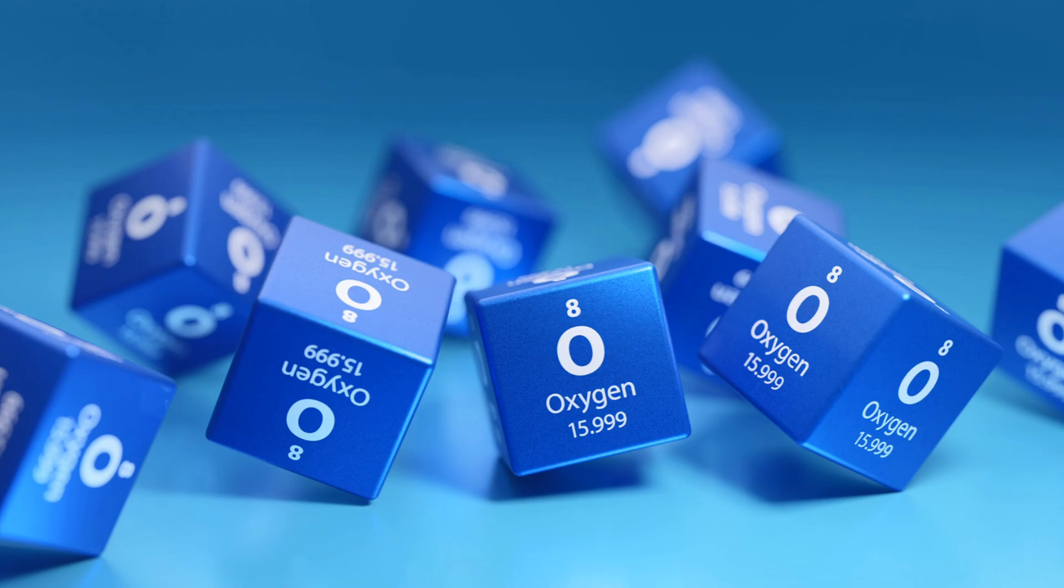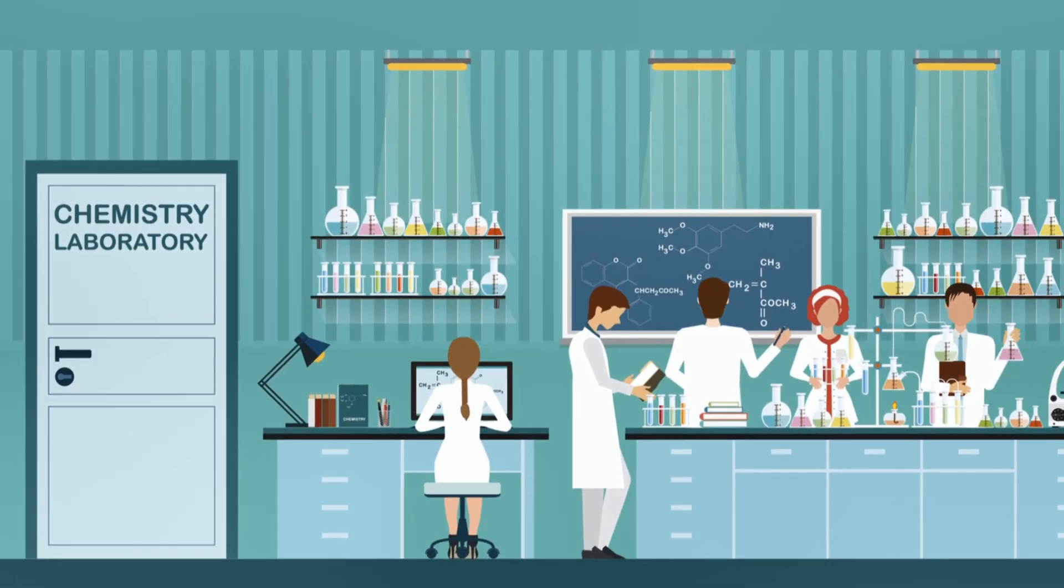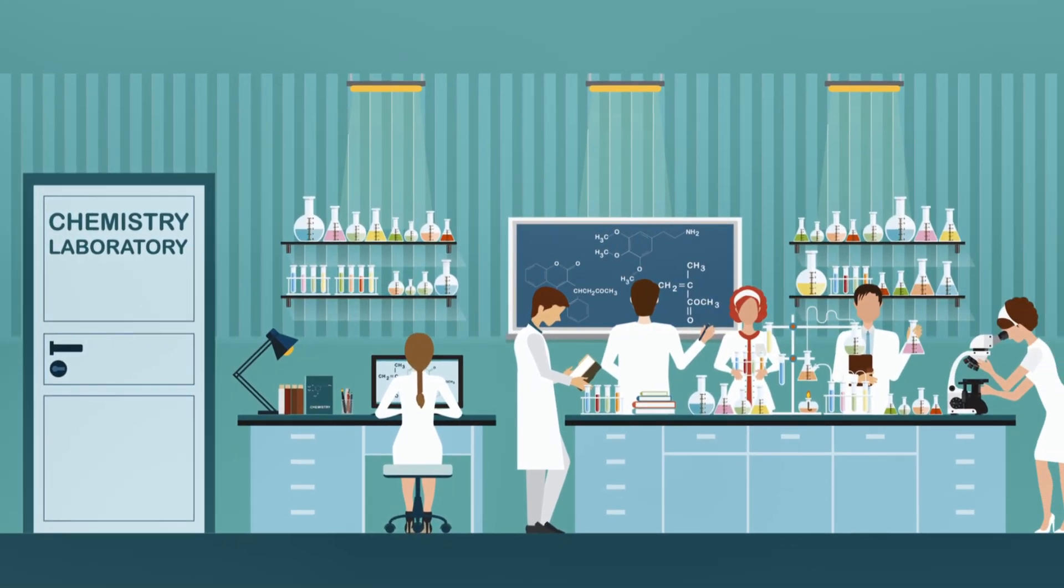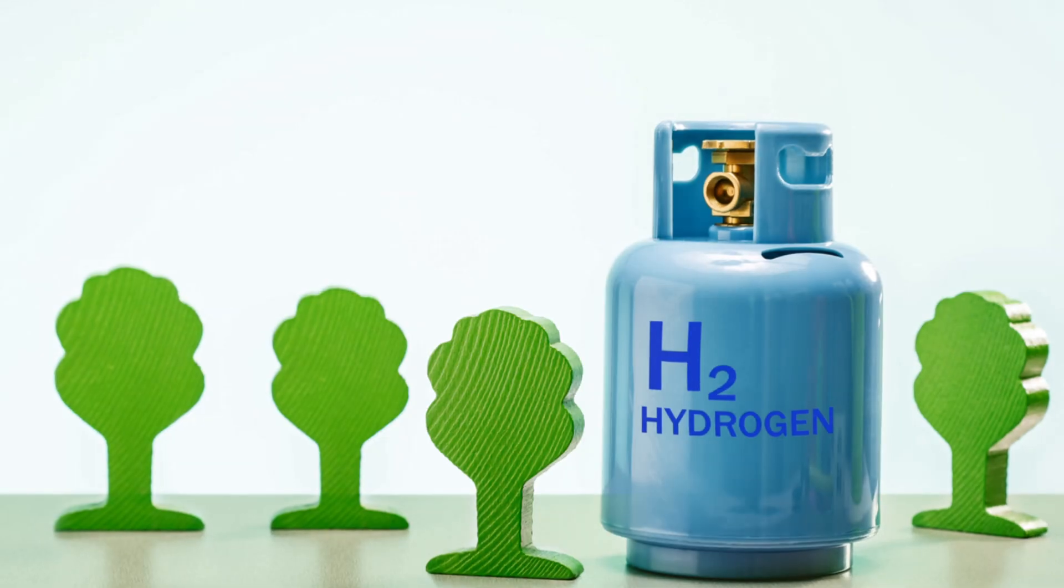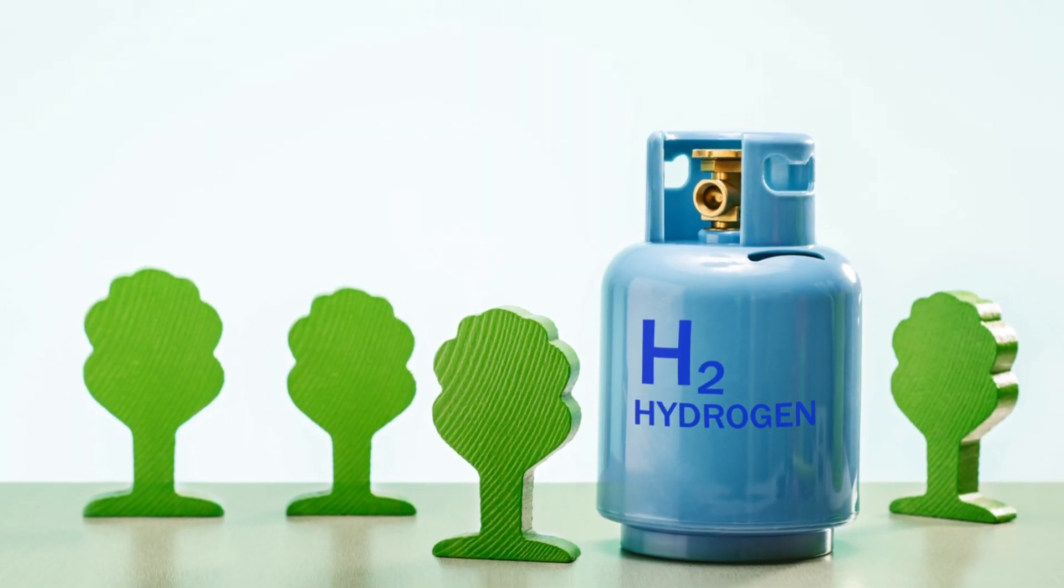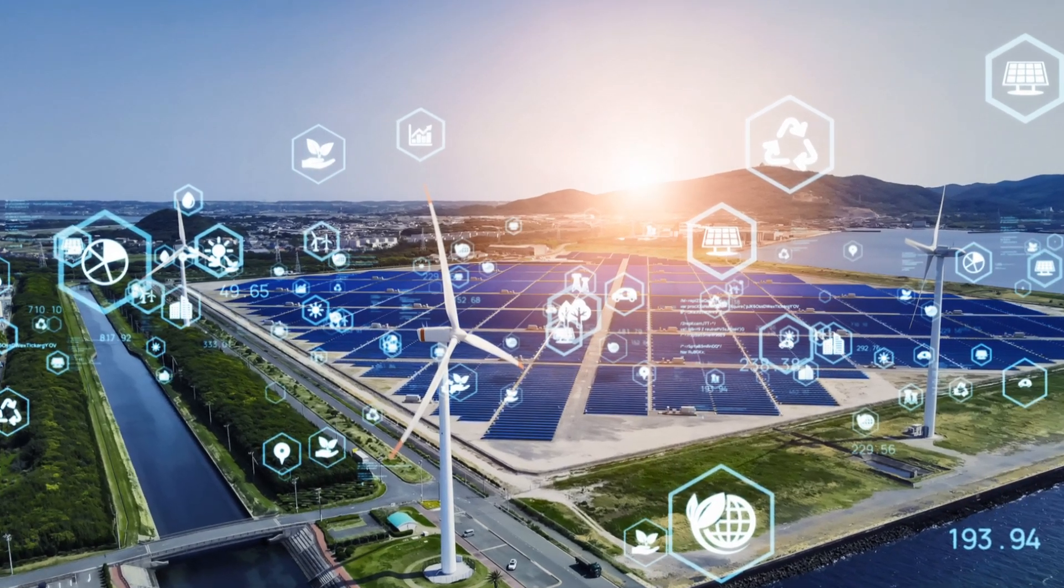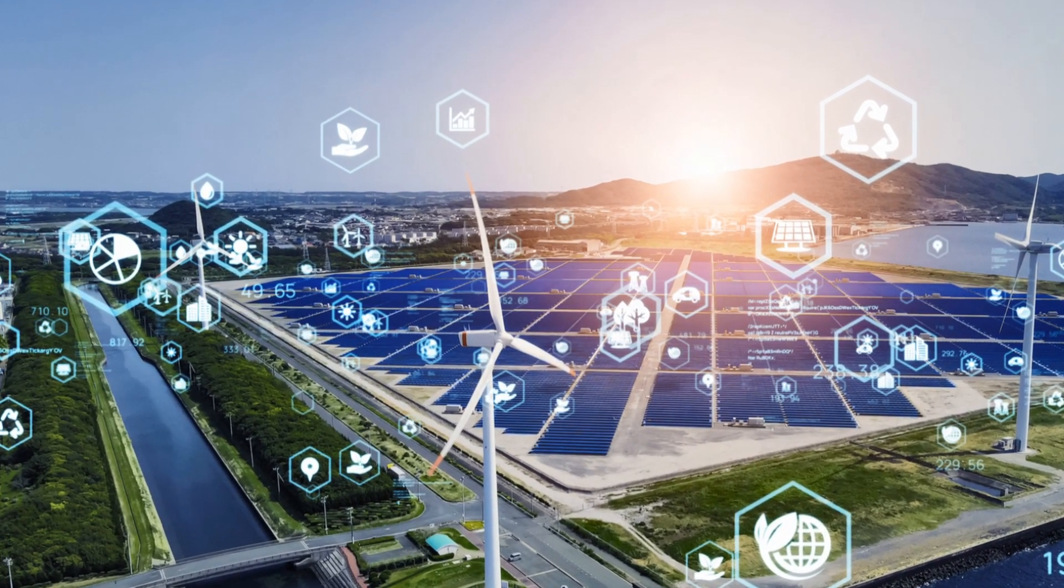Here we see water vapor turning into hydrogen and oxygen, thanks to the electricity we feed into the system. And it gets even more interesting. With the species transport model activated, we can track how hydrogen, oxygen, and water vapor move and react within the cell. This is crucial for optimizing our electrolysis process.